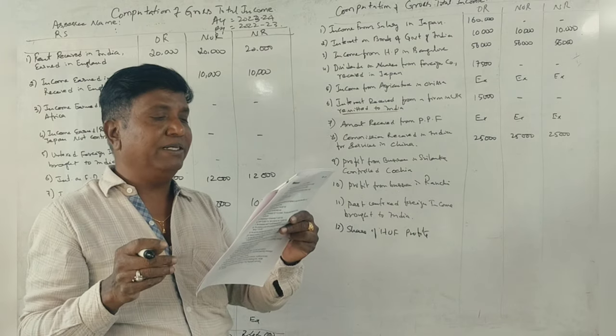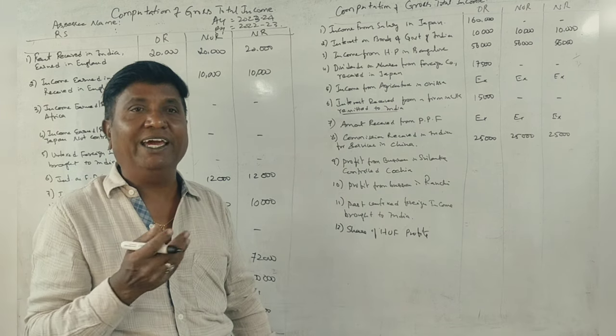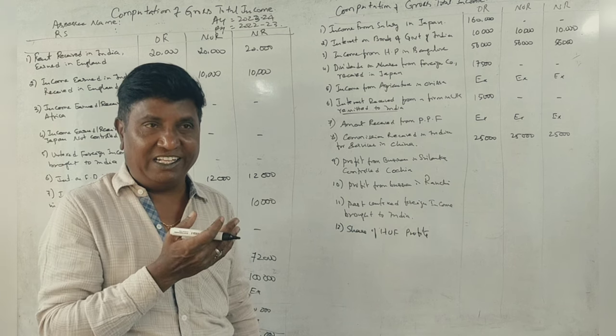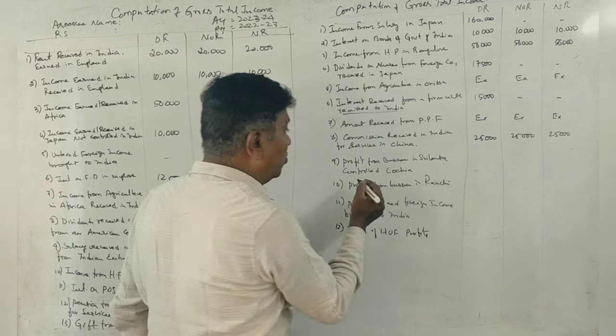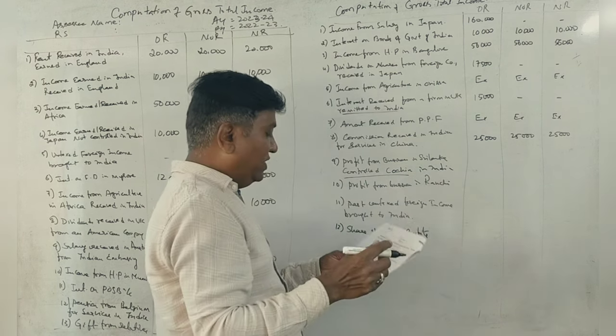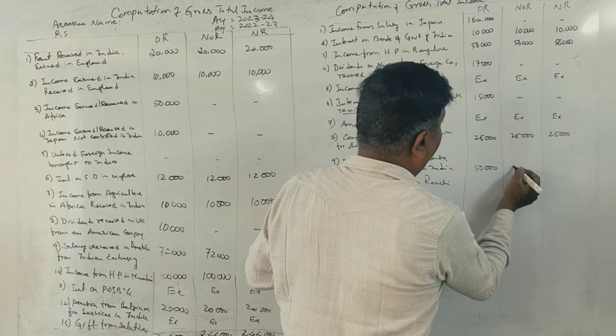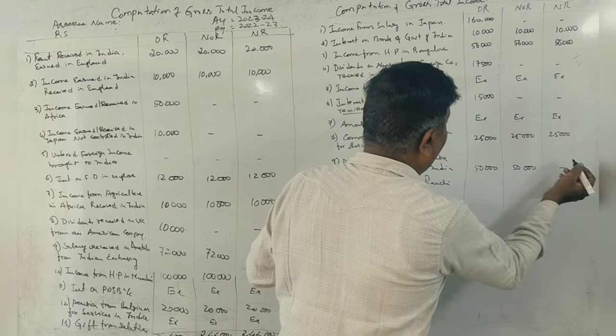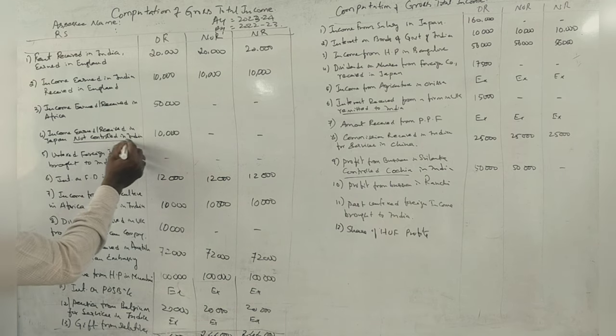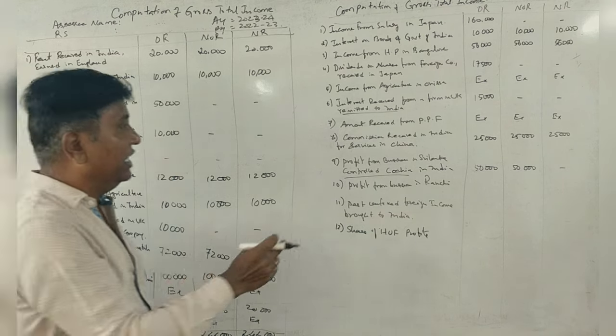Profit from business in Sri Lanka, controlled from Cochin. Cochin in India. Controlled in India. First two cases taxed, 5,000. Controlled also from outside India, not controlled in India.